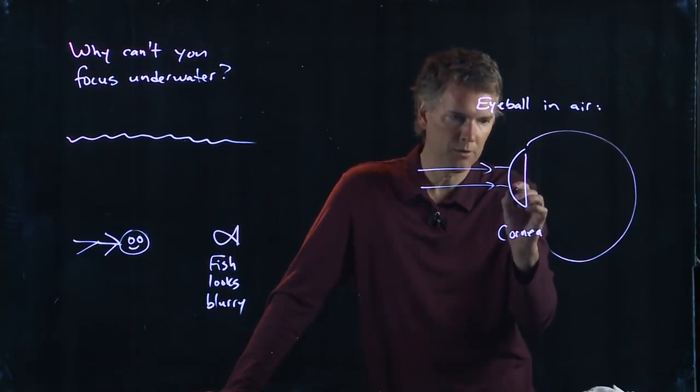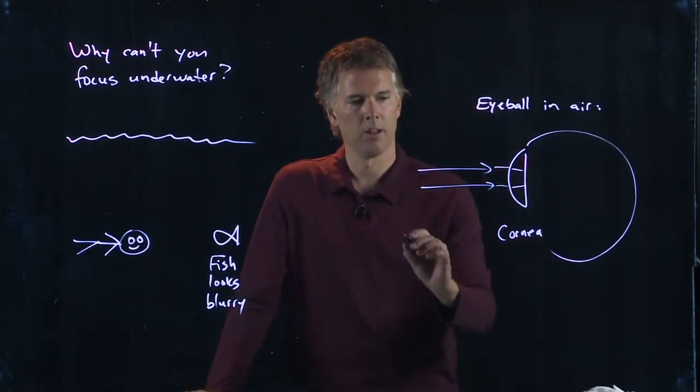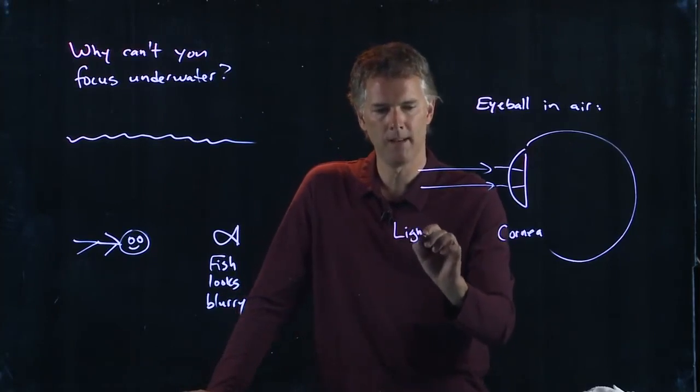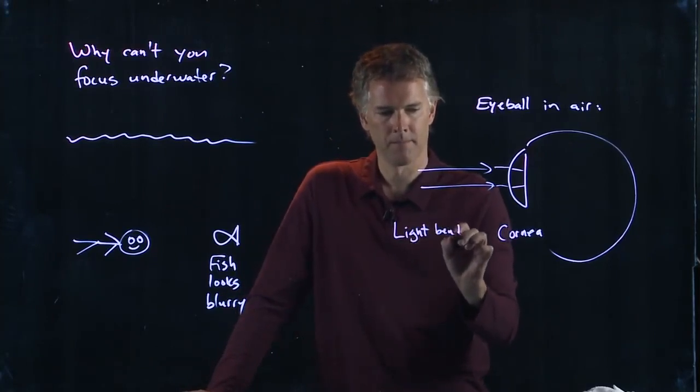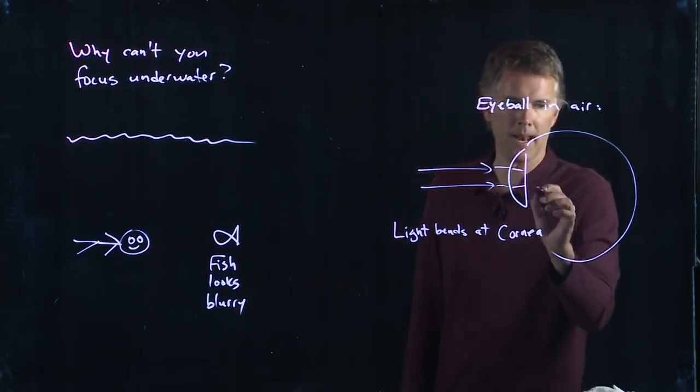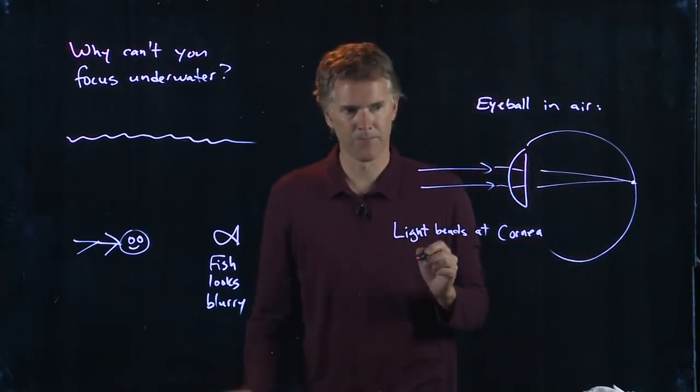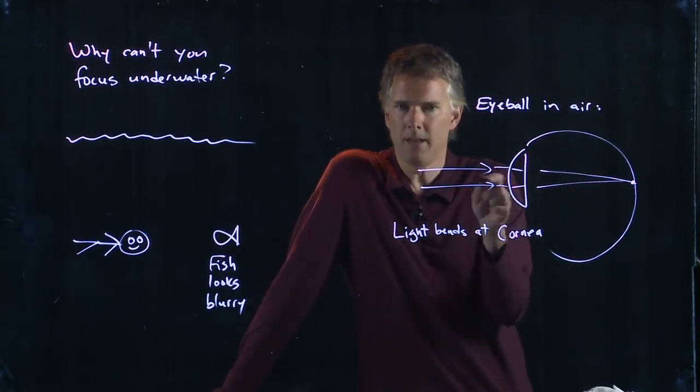And so there's going to be bending at that first surface. The light is going to bend at the cornea. And it's that bending at the cornea that's going to allow it to focus on the back of your eyeball. But why does it bend there?